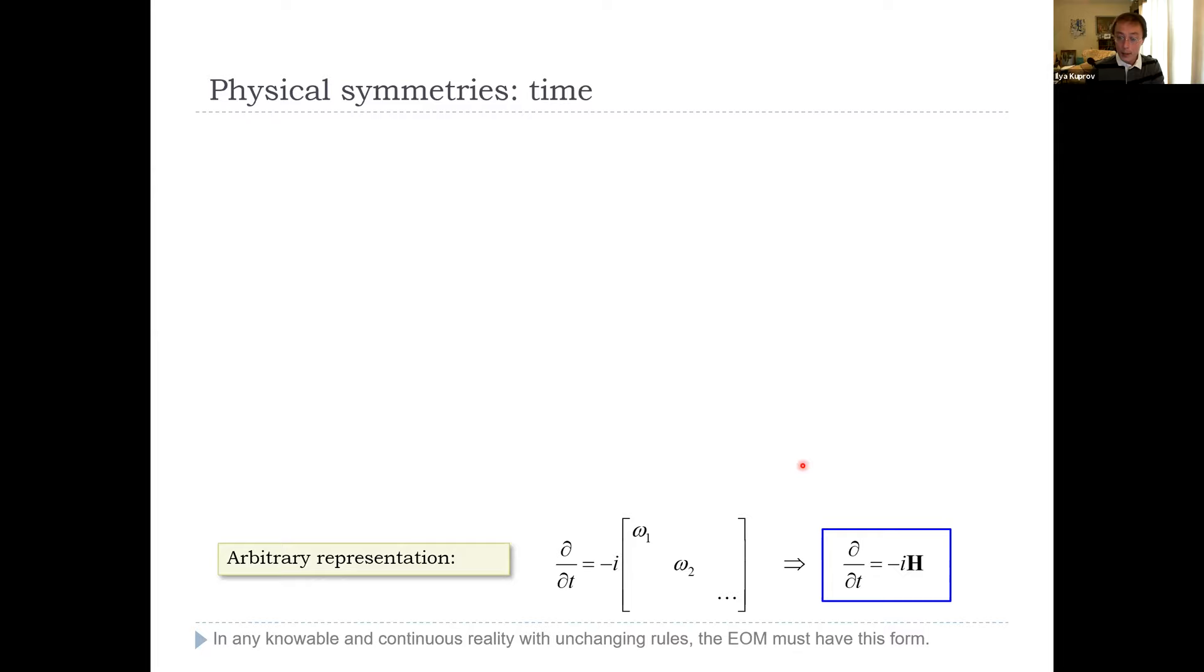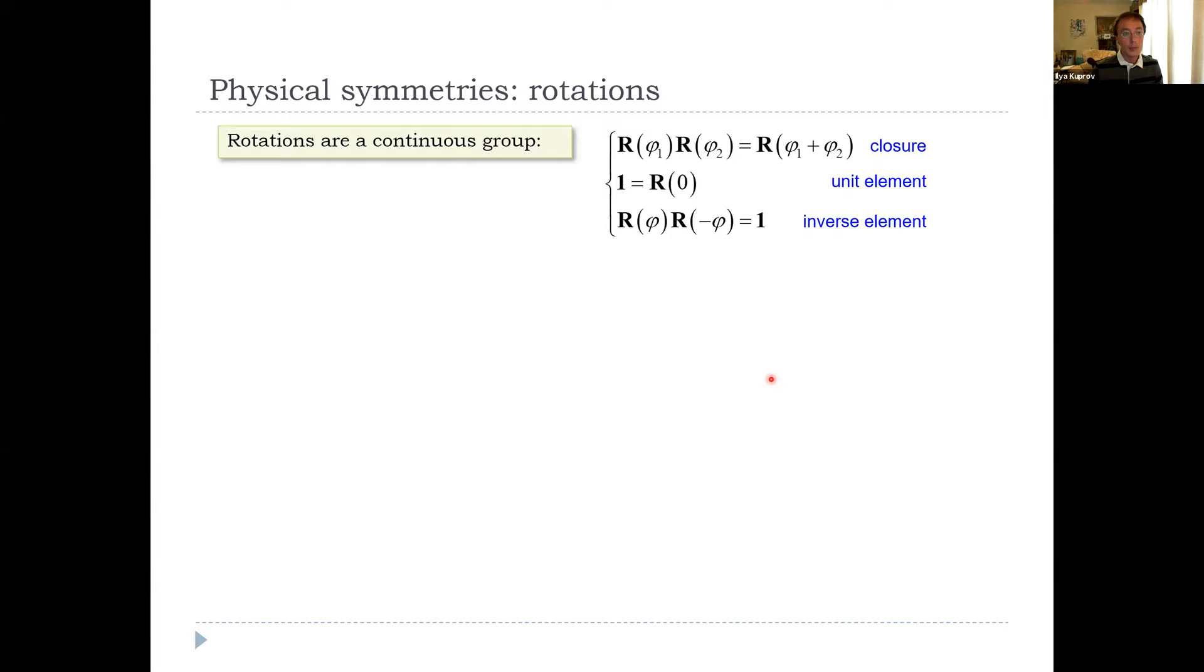We didn't have to make too many assumptions for this. In essence, in any knowable and continuous reality with unchanging rules, the equation of motion must have this form. Any representation of reality must evolve under the corresponding representation of the propagator group. So we have got quite far from quite a few simple assumptions. Let us now look at other symmetries of reality: Rotations.